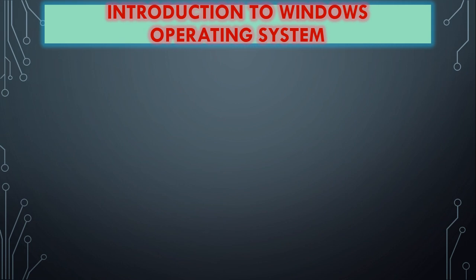Introduction to Windows Operating System. In this chapter, we learn about the Windows Operating System. We know that almost all computers use a Windows Operating System. We also use mobile phones — we use Android as the operating system for mobile computers. Then for Apple computers, there is the iOS Operating System. We use the basic operating system, which is the Windows Operating System.